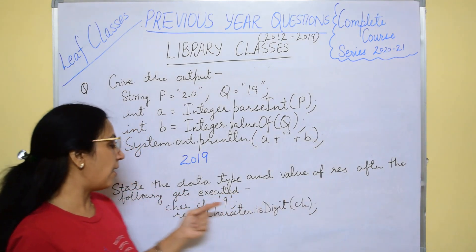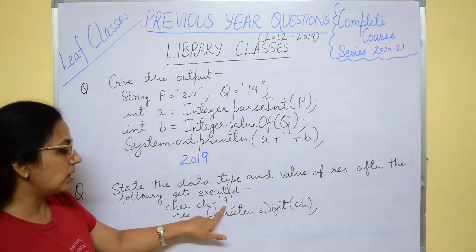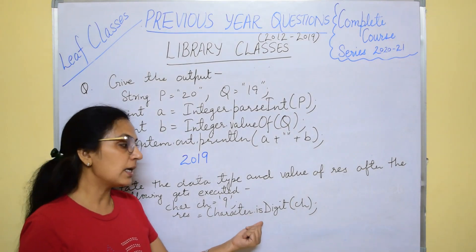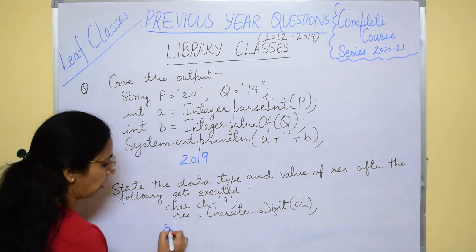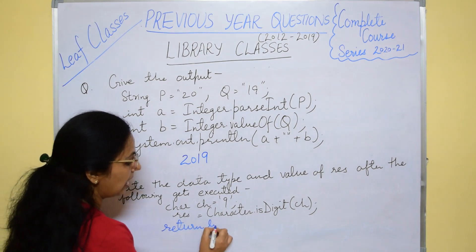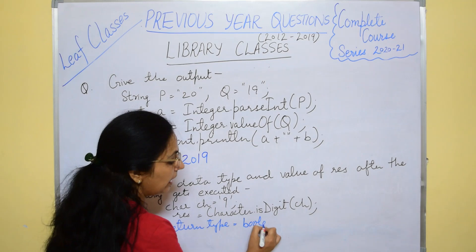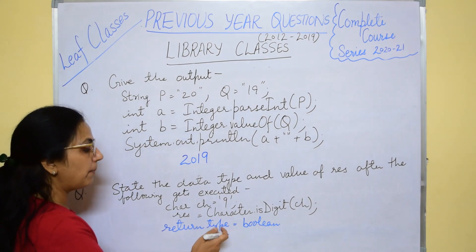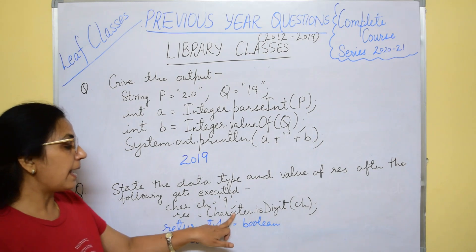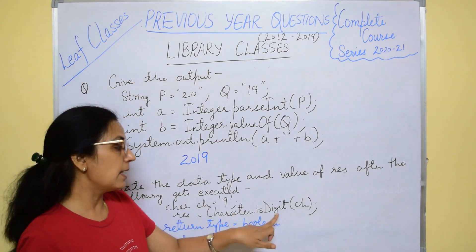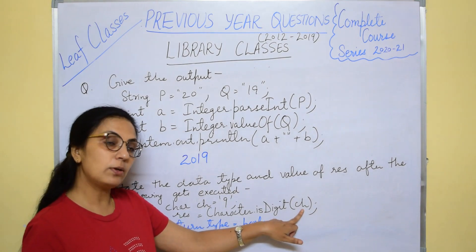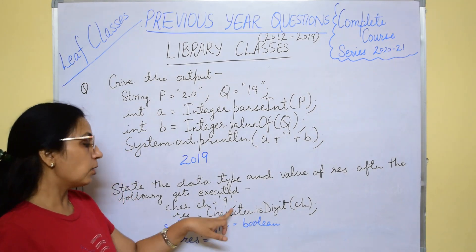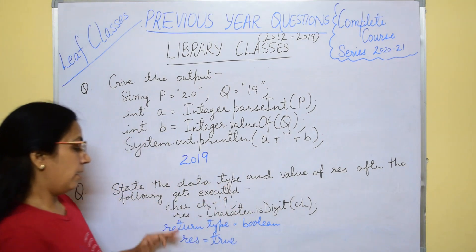The second question of 2019: state the data type and value of res after the following code executes — char ch = '9'; res = Character.isDigit(ch). Since the function has 'is', the return type is boolean — write with a small 'b', because with a capital 'B' it becomes the wrapper class. The value of res: Character.isDigit(ch) checks if ch is a digit. CH contains '9', and 9 is a digit, so it will return true.